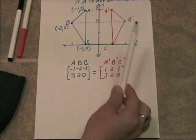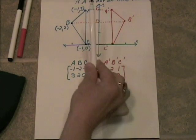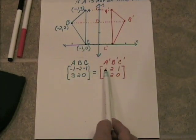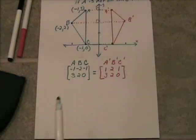So the only thing that's going to change is your X values, and they're just going to become opposite of what they were originally. So the negative 1, negative 2, negative 1 became 1, 2, 1, and the 3, 2, 0 stayed the same.